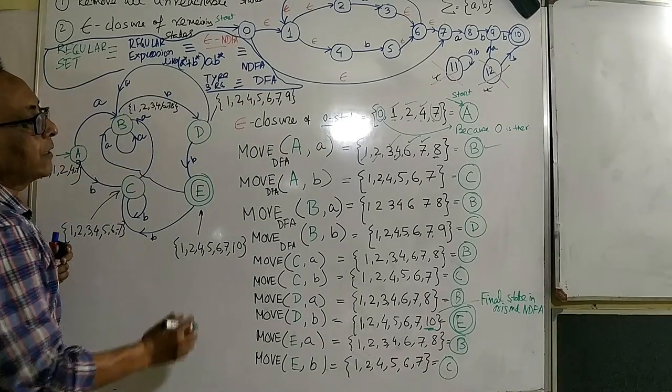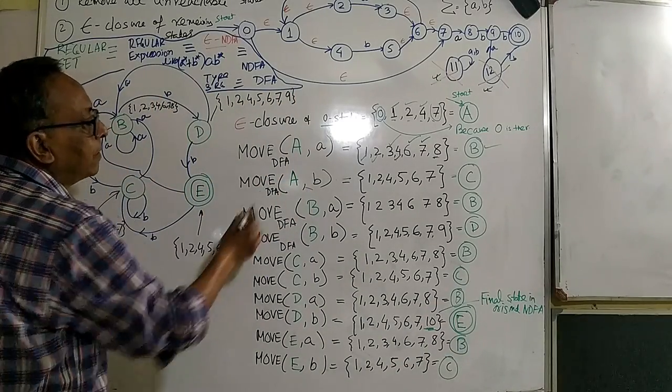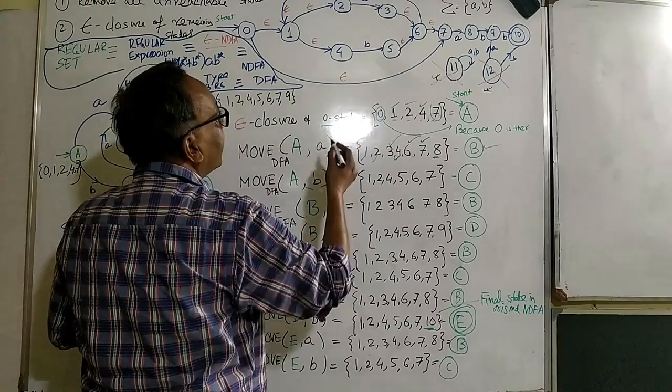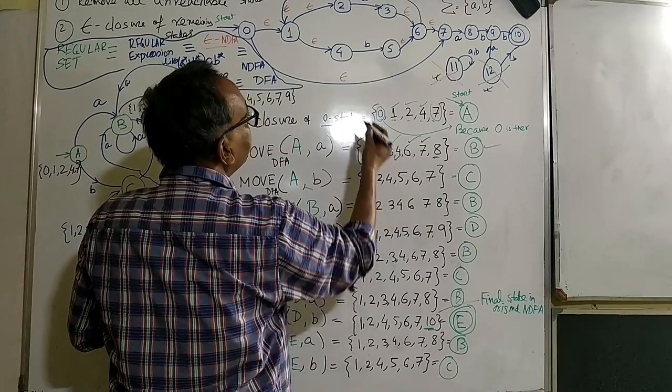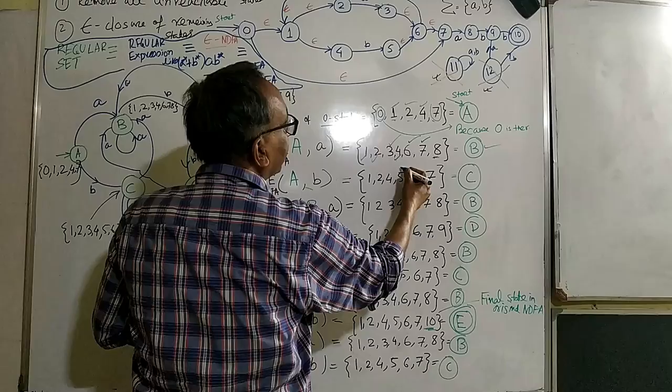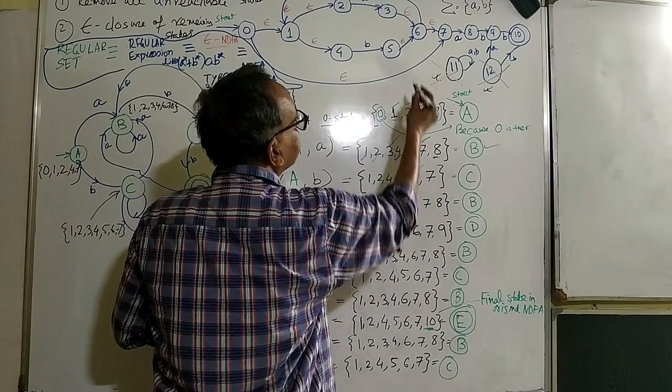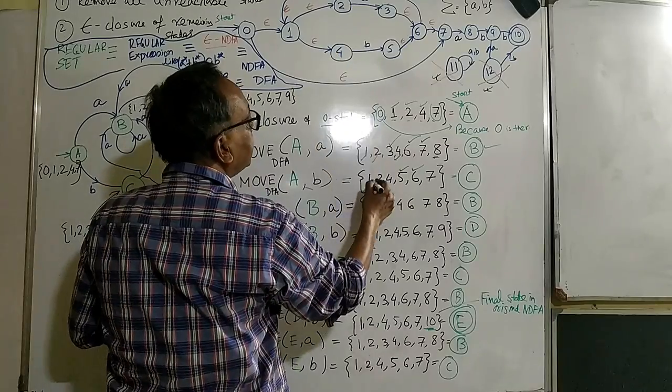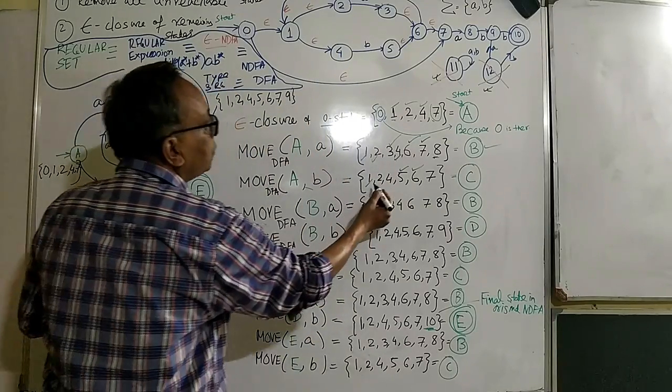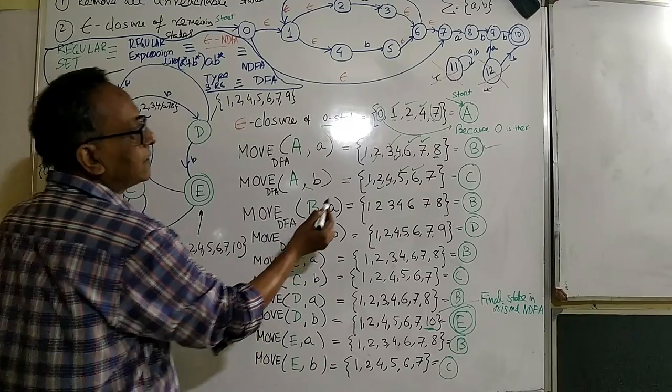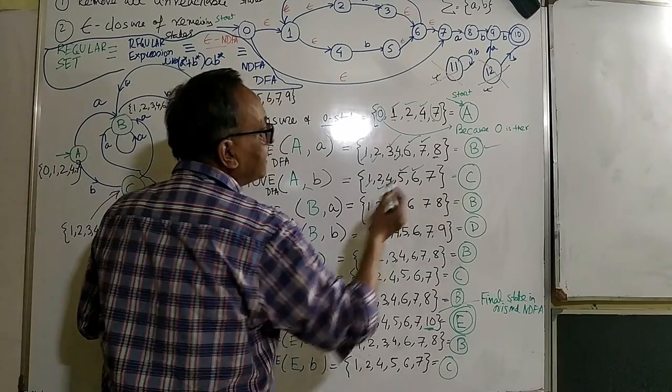And now we can go for A comma B. We can A comma B, you can see it here, like four, five. So definitely five should be there. Because your originally four and five is there. Five because six is there. Because six is there, a one is there. Then two is there. And because four is there. So you can see it, this is a new state, that is a C.